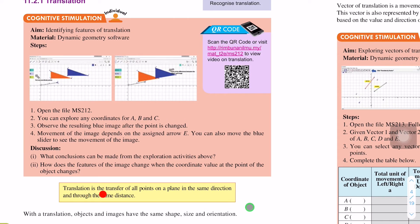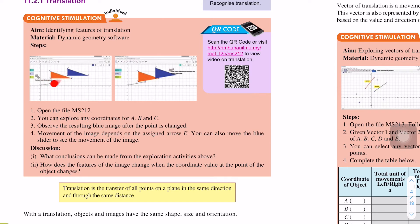Translation is the transfer of all points on a plane in the same direction and through the same distance. Kalau contoh segitiga tadi, kalau satu titik saya gerak, dia akan gerakkan semua sekali.